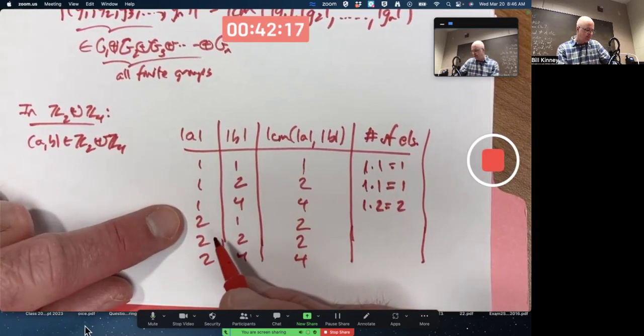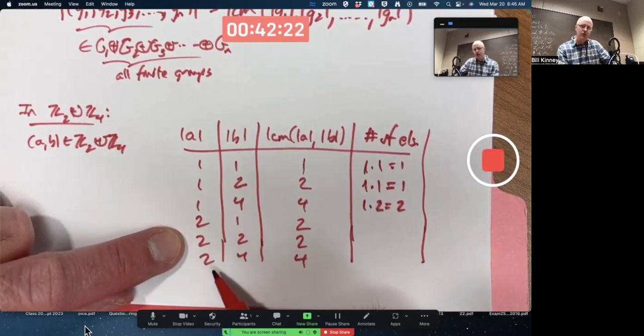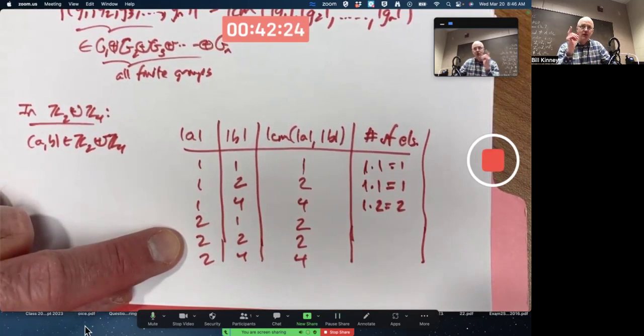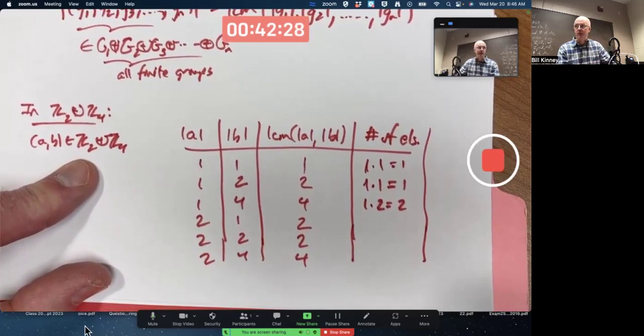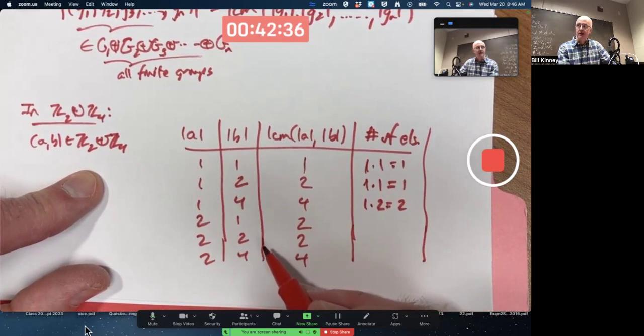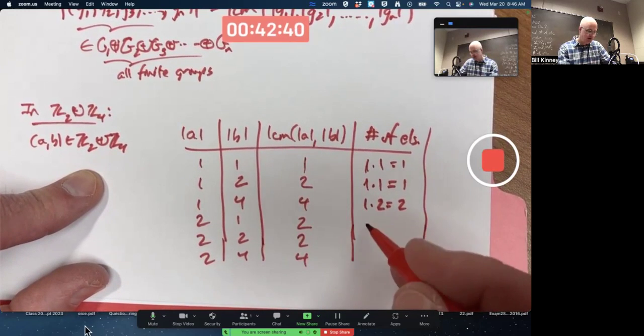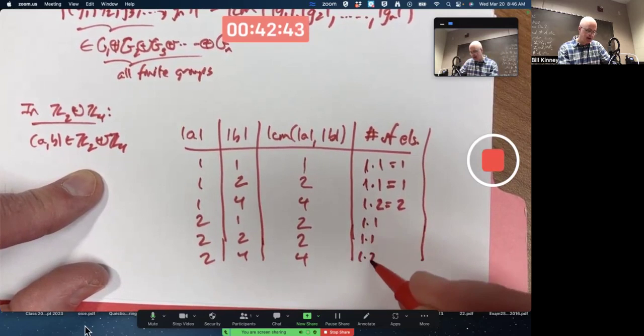Keep going. For each of these possible orders of A, 2, 2, and 2, there's only one thing A can be. In Z2, it's got to be the number 1. For these two things for B, the order of B, they lead to one possibility for what B could be. And this one, once again, leads to 2. So here you have 1 times 1, 1 times 1, and 1 times 2 again.